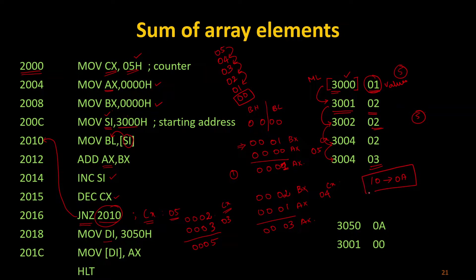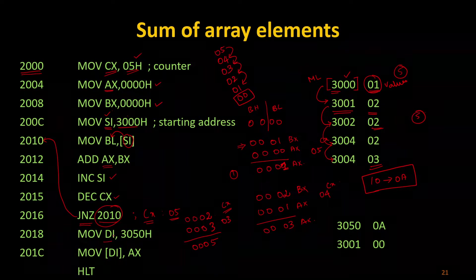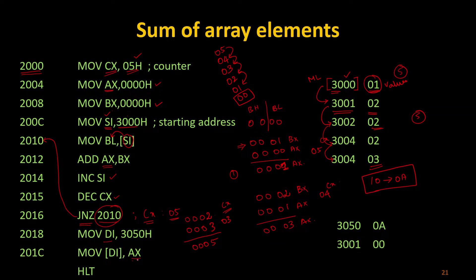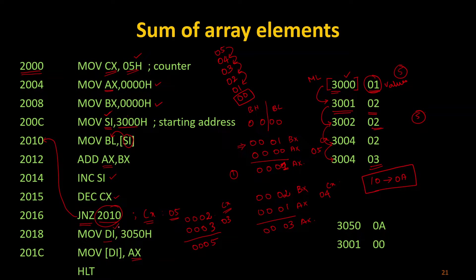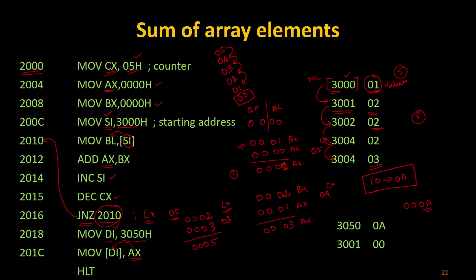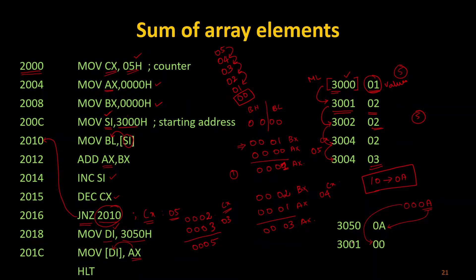This is my required output after finding the sum of the array. To store AX to some memory location, since I used SI as the source index, I will use DI as the destination index. I am pushing the value 3050 into DI, then moving the value of AX to that specific memory location. So the value 000A will be stored there — 0A at one position and 00 at the next.